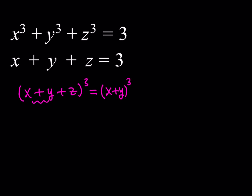So I'll write it like this: (x + y)³ plus 3(x + y)²·z plus 3(x + y)·z² plus z³. This is just the standard expansion — if you're cubing a plus b, you get a³ + 3a²b + 3ab² + b³. So it's pretty much the same thing.